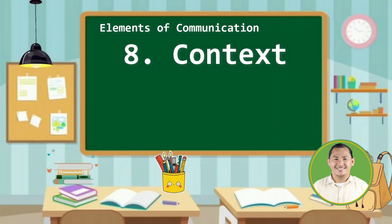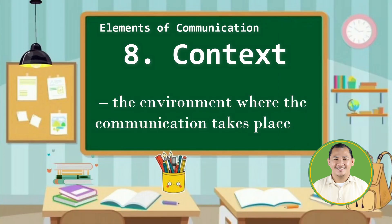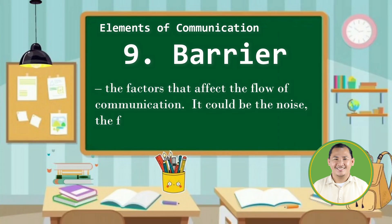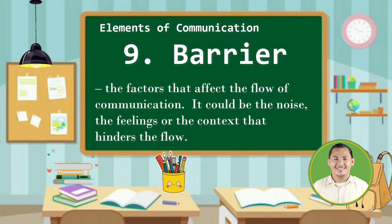Number eight, context. Context is the environment where the communication takes place. Number nine, barrier. Barriers are the factors that affect the flow of communication. It could be the noise, the feelings, or the context that hinders the flow.